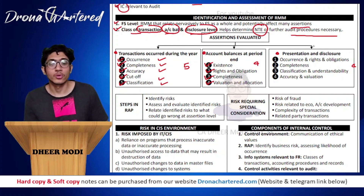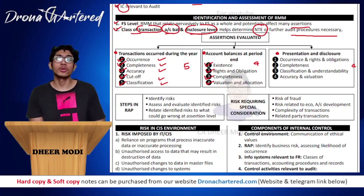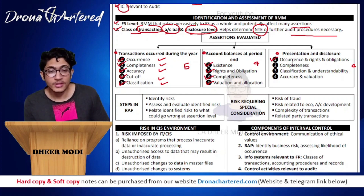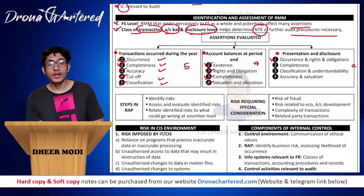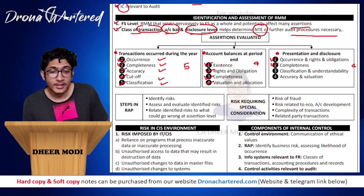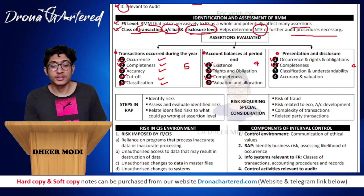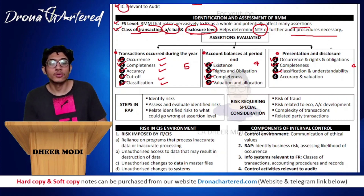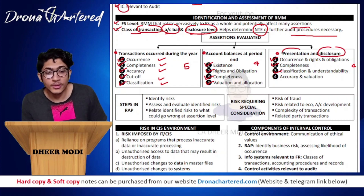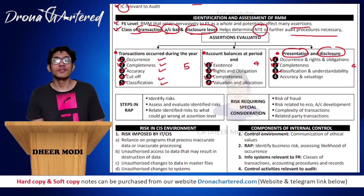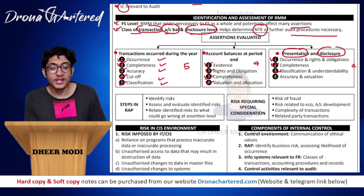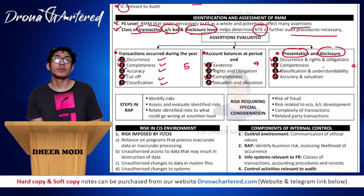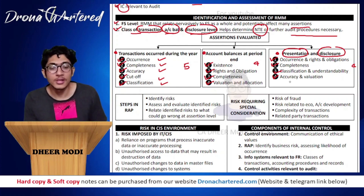For presentation and disclosure, the assertions to be evaluated are: first, occurrence and rights and obligations - these have actually occurred and whether the company has rights and obligations against it; second, completeness - your presentation and disclosure should be complete; third, classification and understandability - they should be classified perfectly and understandable by any rational person who knows how to read financial statements; and last, accuracy and valuation - whatever amount or valuation you have disclosed should be accurate.